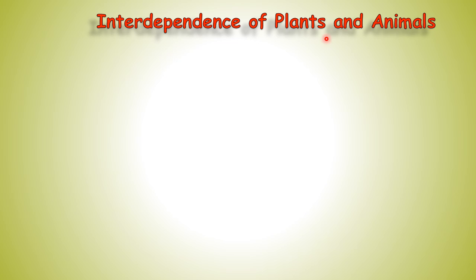In the same way, children, to form a balanced nature, all the plants and animals are dependent on each other. Just assume nature as one body — then plants and animals are different parts of nature's body. Nature is complete or balanced with plants and animals. Now let's see how plants and animals are dependent on each other.